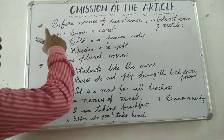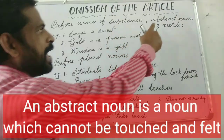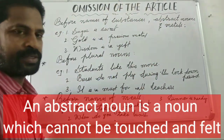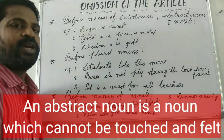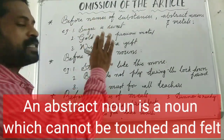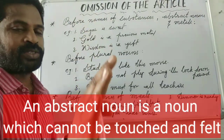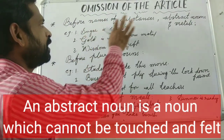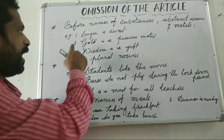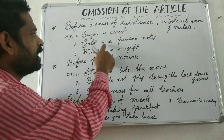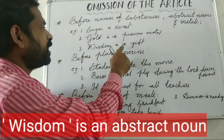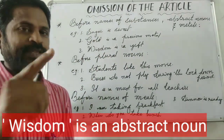We have to avoid using an article before names of substances, abstract nouns, and metals. You should not use an article in front of these words. For example, 'Sugar is sweet' — you are generalizing sugar, so when you generalize a word you need not use the definite article. Similarly, 'Gold is a precious metal' — not 'the gold', just gold. 'Wisdom is a gift' — without article.